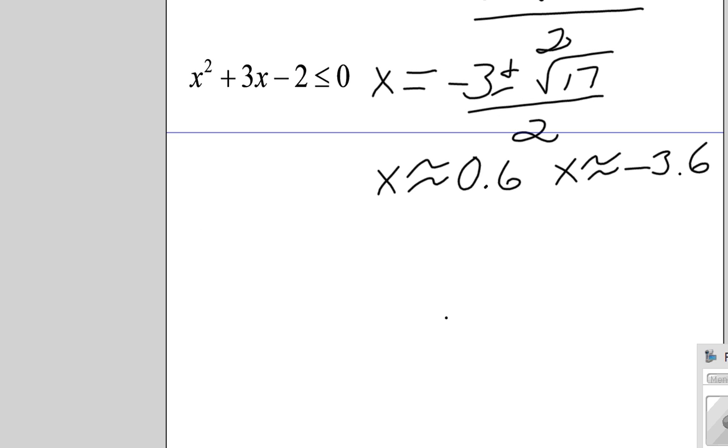All right, the next thing I want to do is I want to take a look at where those two x values are on a coordinate plane. So 0.6 is somewhere between 0 and 1. And negative 3.6 is somewhere between negative 3 and negative 4.